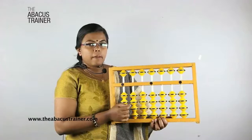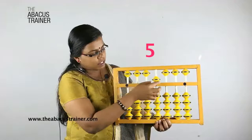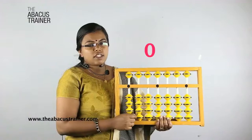To get 5 on an abacus, move the upper bead towards the unit bar. This is 5. Once again, to get 5 on an abacus, move the upper bead towards the unit bar. This is 5.